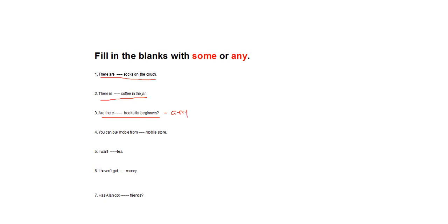Number four: 'You can buy mobile from ___ mobile store' — it is a positive sentence, but the meaning is 'no matter which store', so this is the exception: the answer is 'any'. 'You can buy mobile from any mobile store.' Number five: 'I want ___ tea' — general affirmative sentence, so answer is 'some': 'I want some tea.' Number six: 'I have not got ___ money' — general negative sentence, so answer is 'any': 'I have not got any money.'